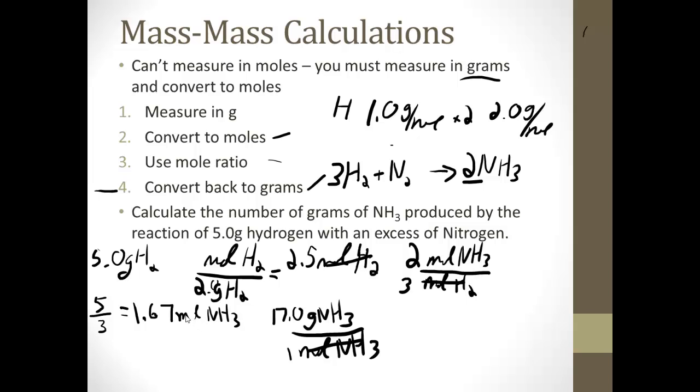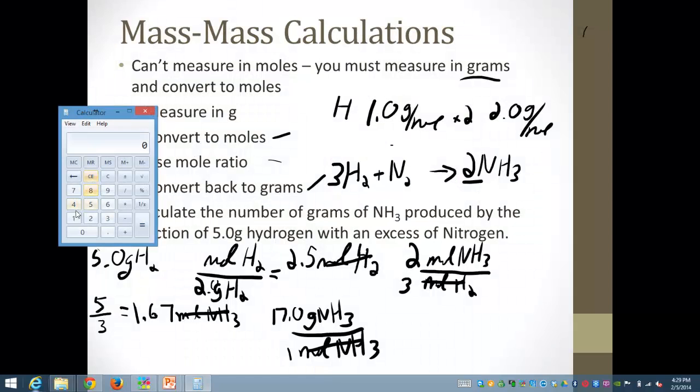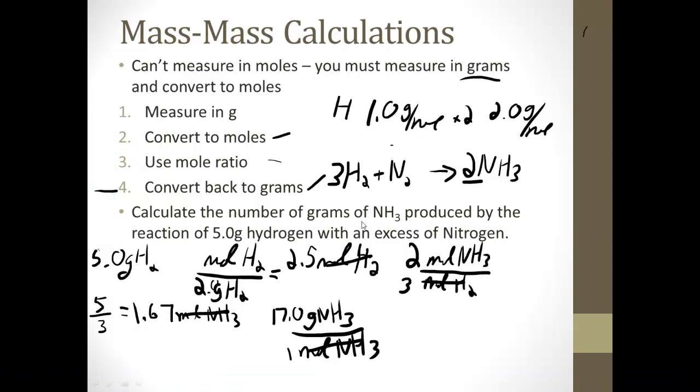I'm going to say 28.4 grams of ammonia. So what did we do? We had our measurement in grams, we started with our 5 grams. We converted that to moles by doing what you want over what you got, moles per grams. And we got 2.5 moles. We used our mole ratio that we got from our balanced equation. That was 2 moles NH3 to 3 moles hydrogen. And we multiplied 2.5 times 2 and divided by 3. And we got 1.67 moles of NH3. Then we did what you want over what you got. We wanted grams, we had moles. The gram formula mass is 17.0. So it ended up being 1.67 times 17.0 or 28.4 grams NH3. So I want you to back that up and try all those steps on your own without me walking you through it and see how you do.